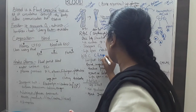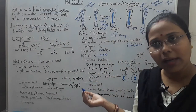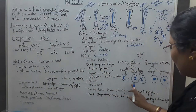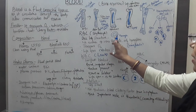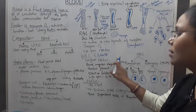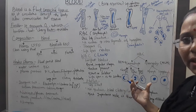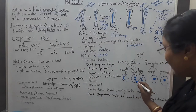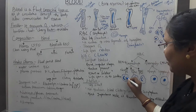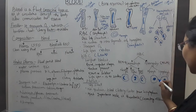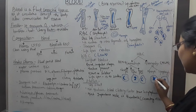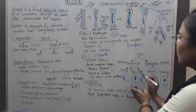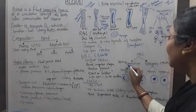WBC is also known as leukocytes — 'leuko' means colorless, so WBC has no color. The size of leukocytes is larger than RBC, making it the largest blood cell. It is round but irregular in shape, and a nucleus is present. Some WBCs contain granules in the cytoplasm — these are called granulocytes. Monocytes and lymphocytes have no granules and are called agranulocytes.